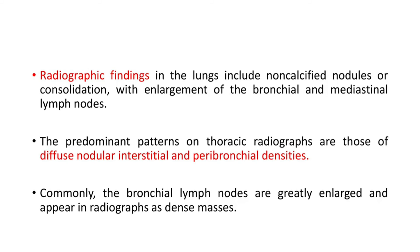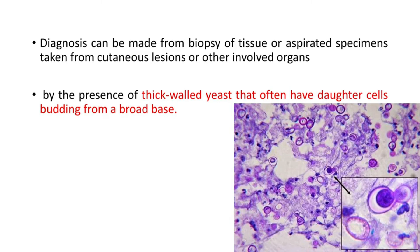The bronchial lymph nodes are generally greatly enlarged and appear on radiographs as dense masses. Diagnosis can be made from biopsy of tissue or aspirated specimens taken from cutaneous lesions or other involved organs, by the presence of thick-walled yeast that often have daughter cells budding from a broad base. This is a thick-walled yeast with a budding daughter cell from the broad base, as seen in this picture.